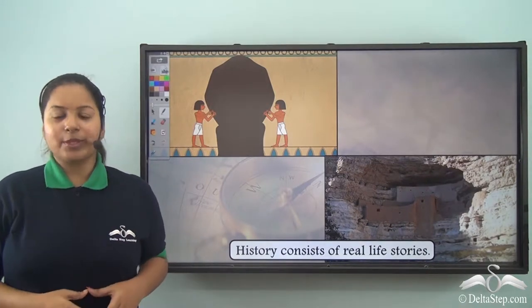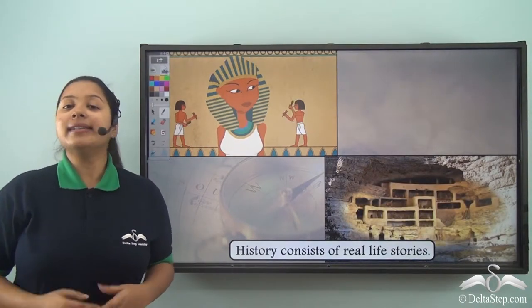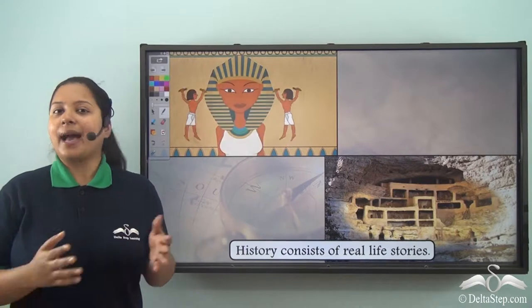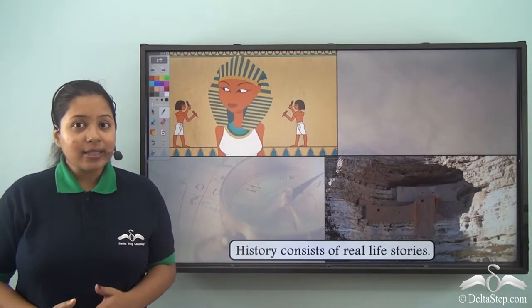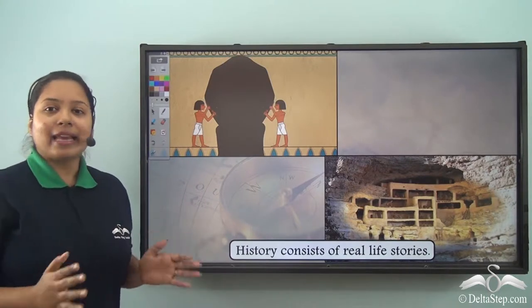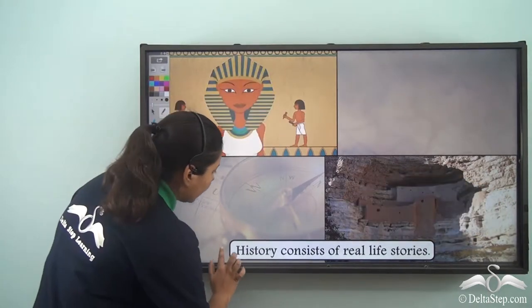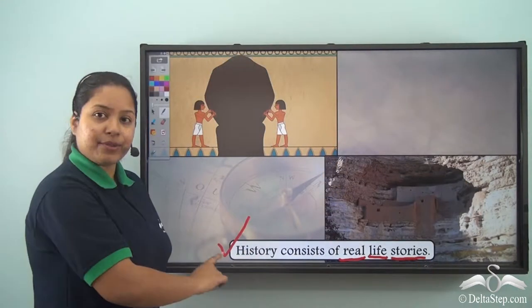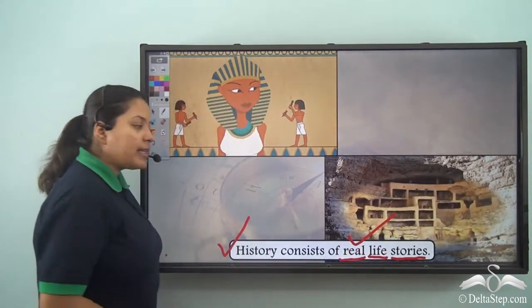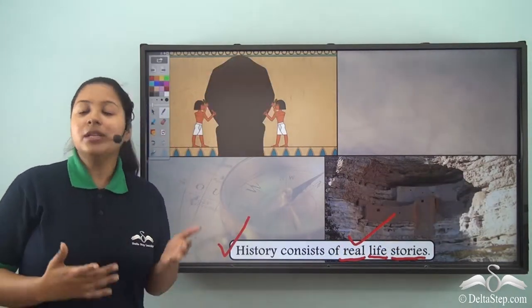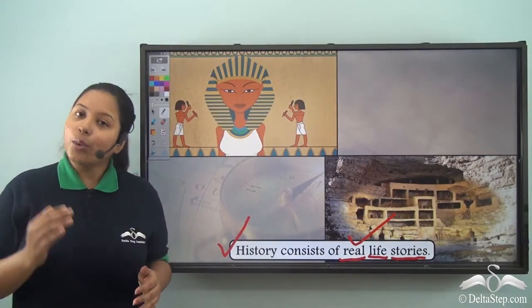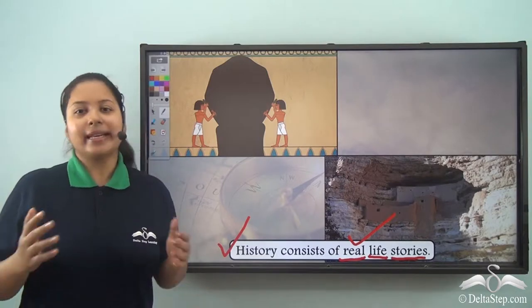But there is a difference between all the stories and the stories of history. Can you tell me what? Well, normal stories can be either real or imaginary. But in history there are real life stories. So history consists of real life stories — the stories that have happened long ago. And these stories together comprise history. So history consists of only stories that have actually happened in the past.